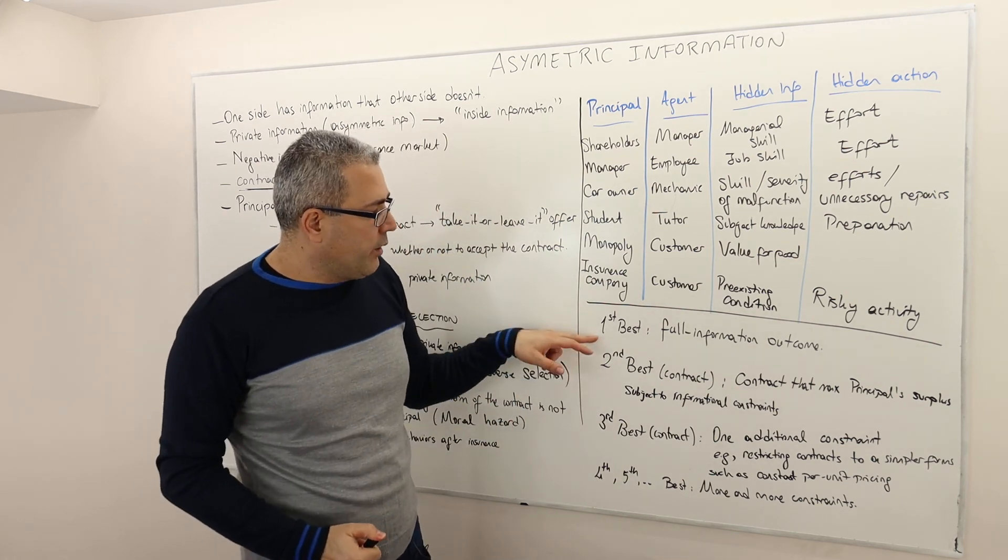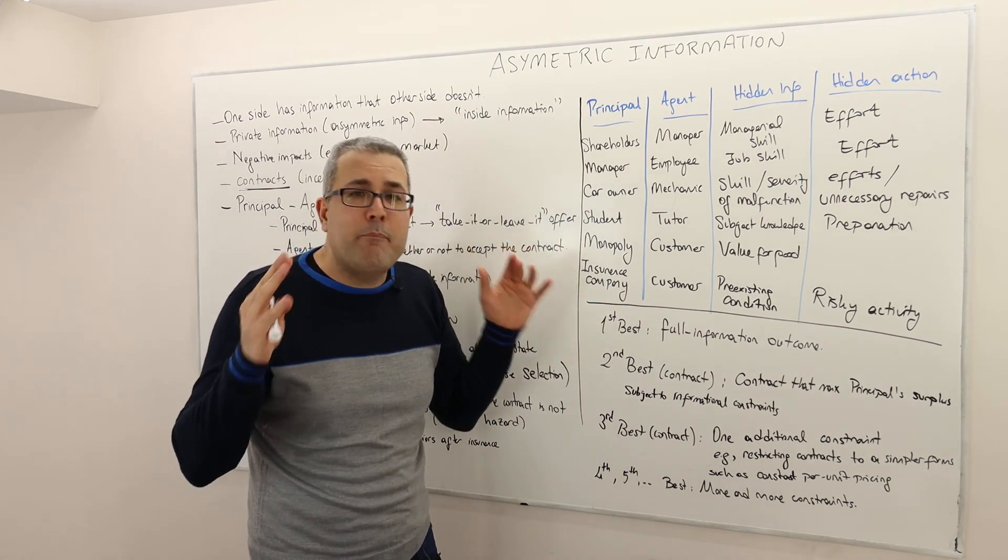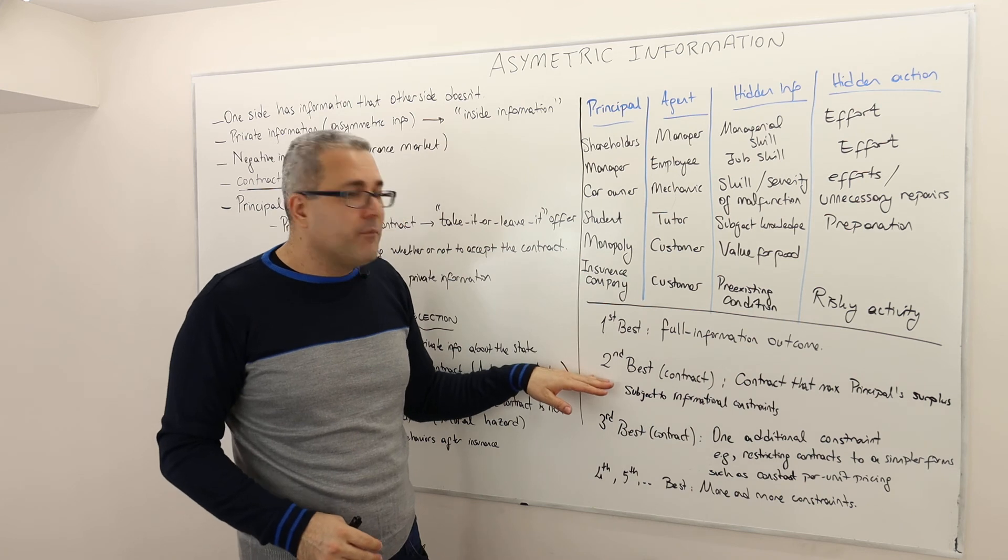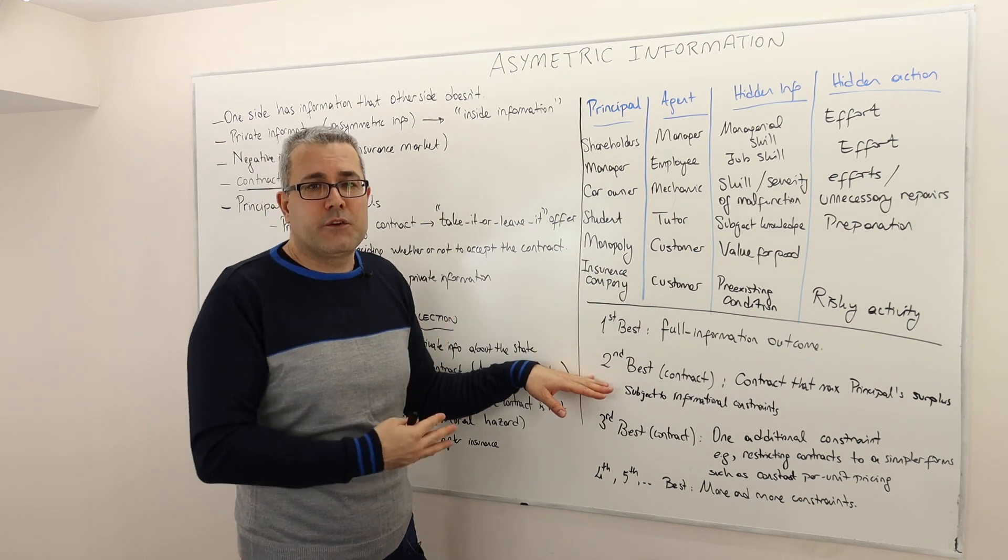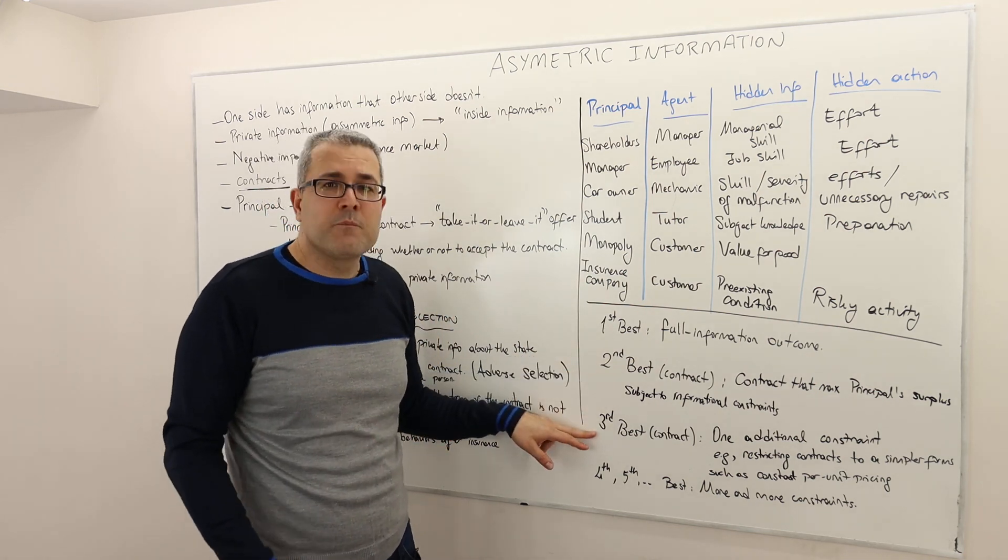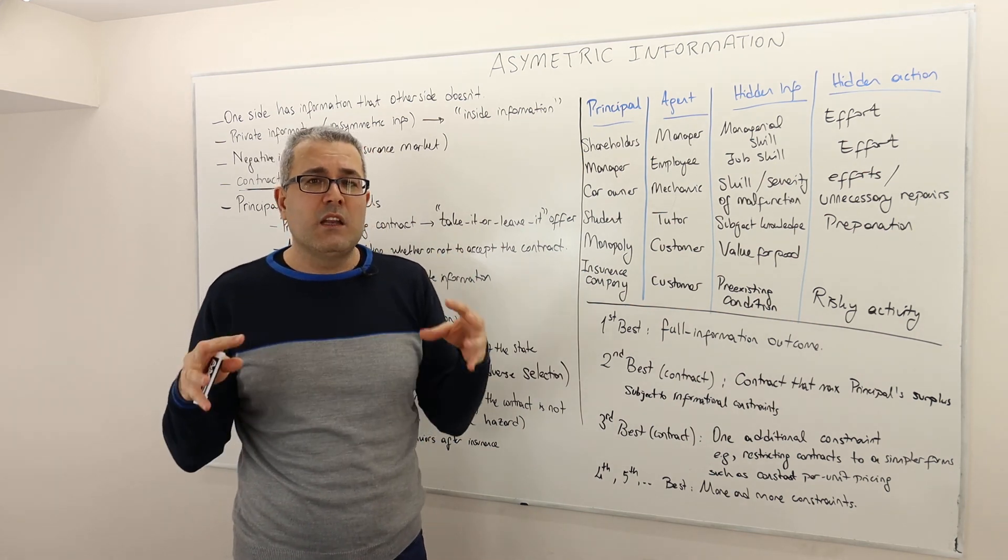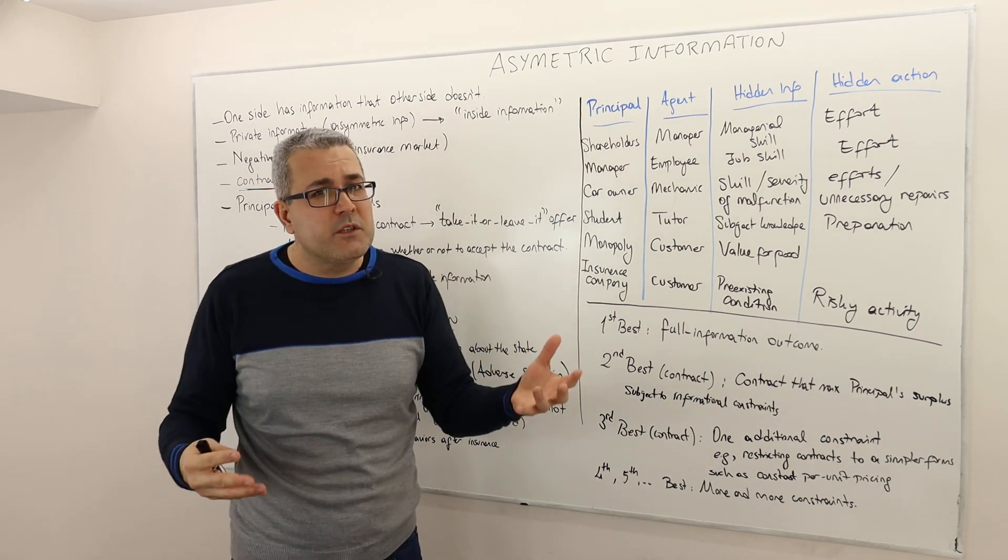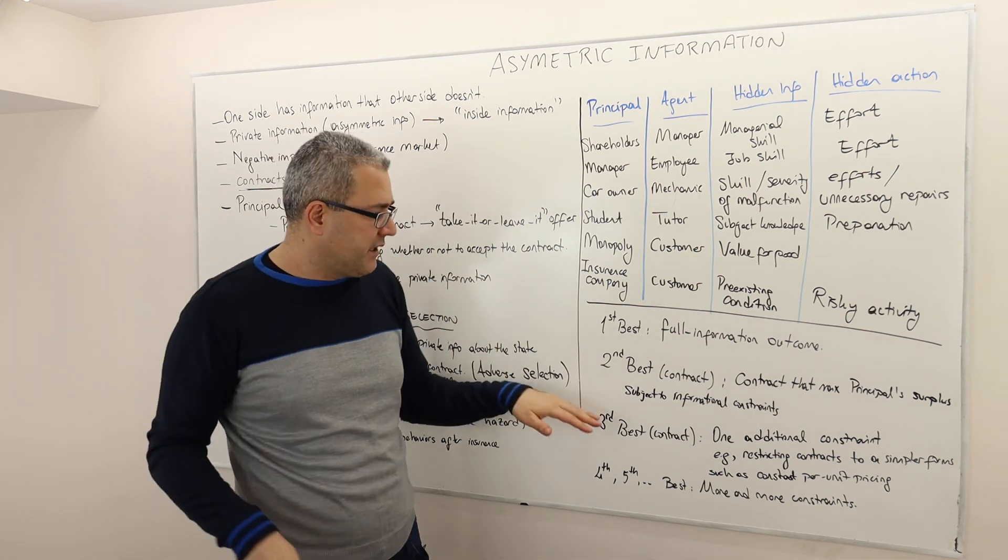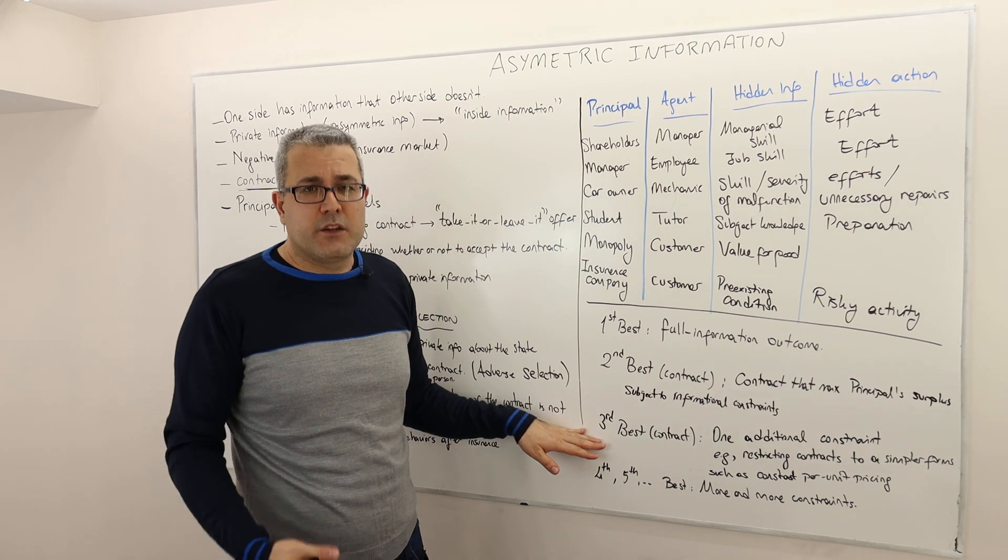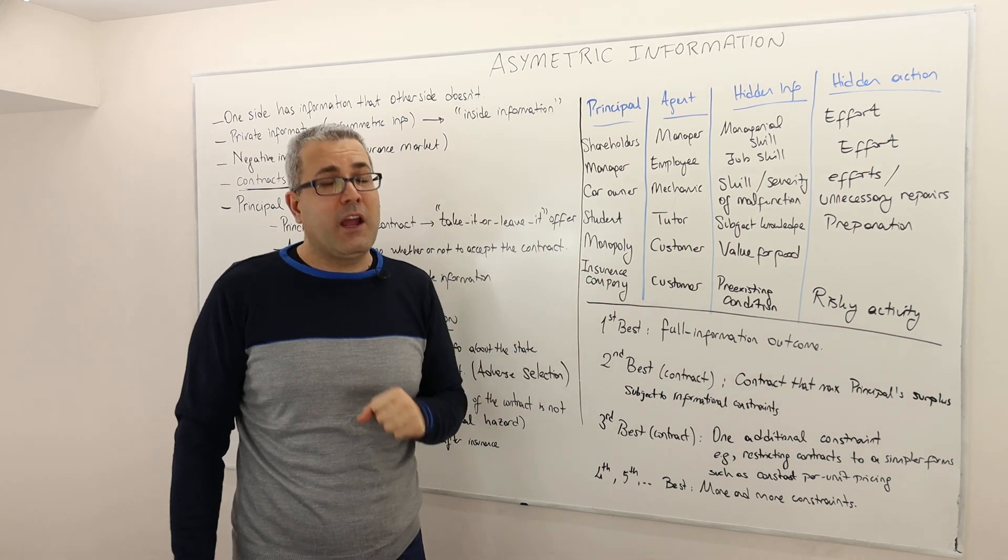Most of the times, obviously, we look at the first best because, as I said, it's a benchmark. Like what would be the best possible outcome? And then we obviously look at the second best. So obviously we can't achieve the first best. What would be the second best? But sometimes the firms or the principles are restricted to design contract that is simple enough because of the government regulations, because of the behavioral limitations of the customer. So whatever the reason is, we may sometimes look at the third best. But that's what we mean by first best, second best, and third best. I hope that was clear. We'll see you later.